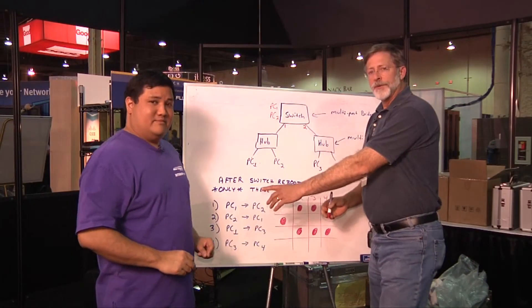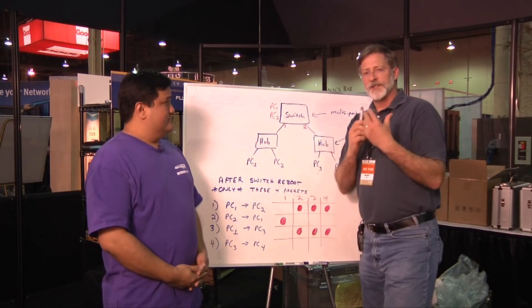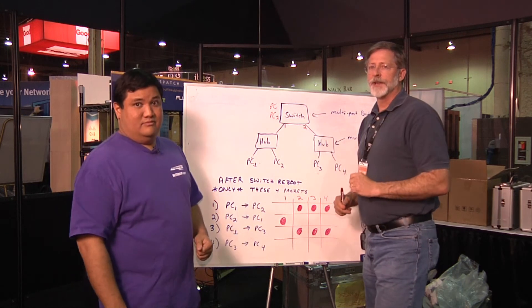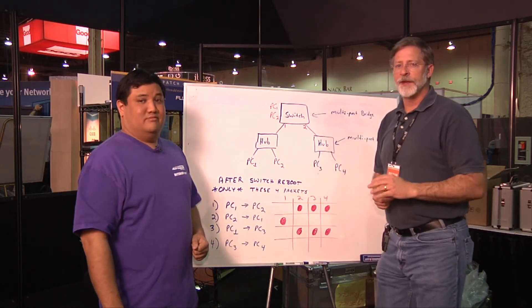So, when that packet went through, who is the source address for that packet? Well, PC1. PC1 is in the table already, so we've already recorded it. The switch doesn't have any extra work to do.